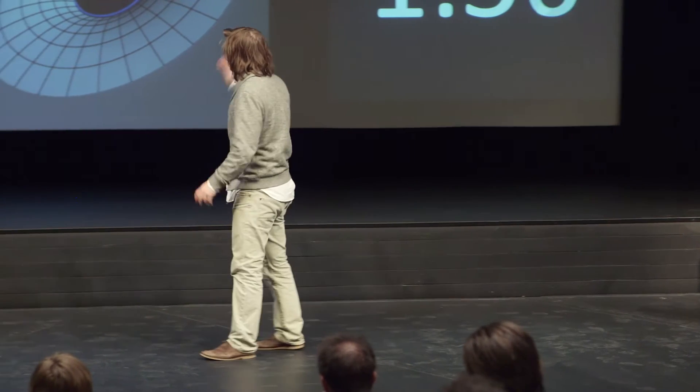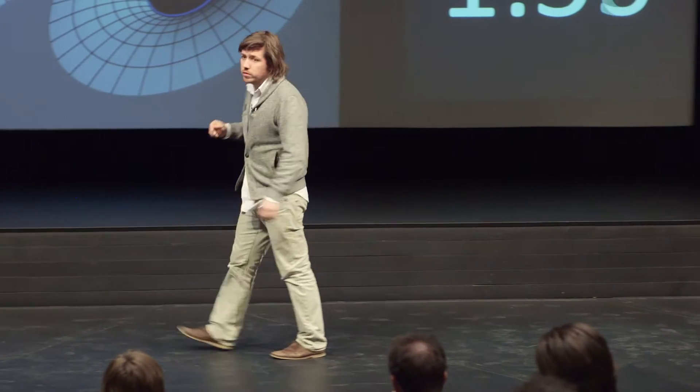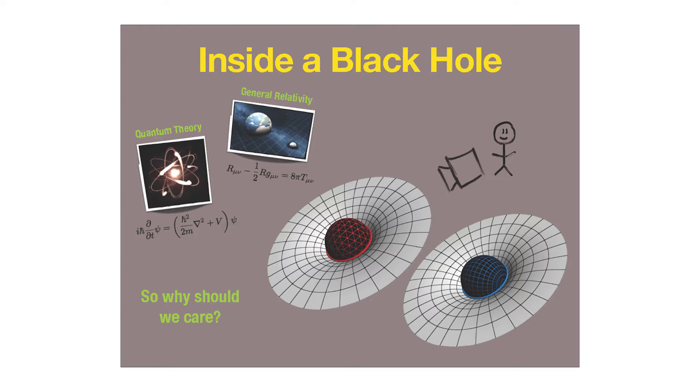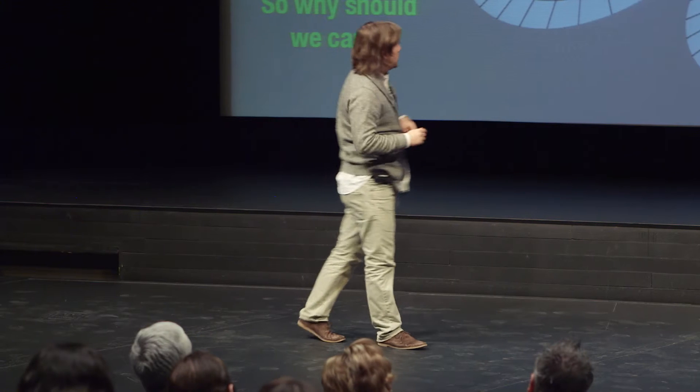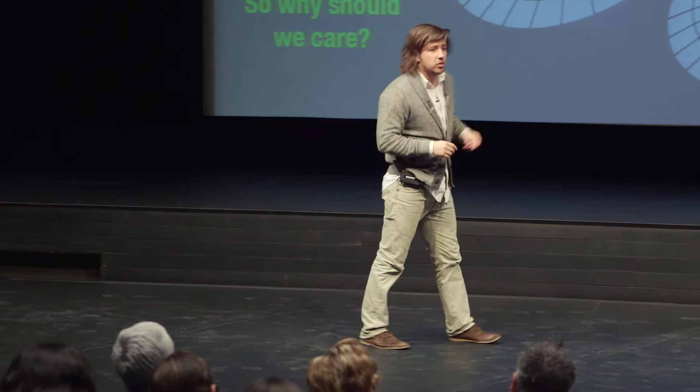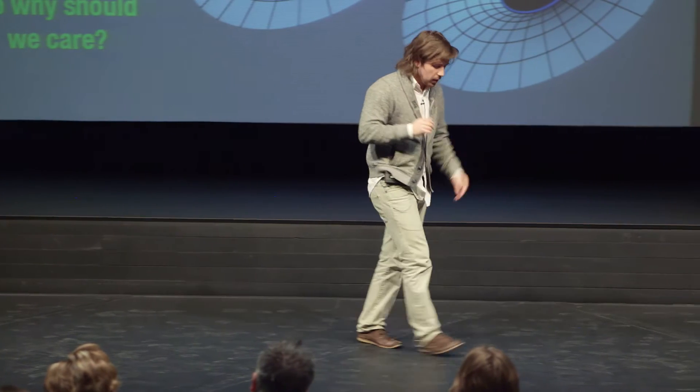The question I'm specifically interested in is: suppose we have two black holes that on the outside look identical — nothing different about them — but inside, inside the event horizon, their structure is different. Is there any experiment an observer standing outside the black hole can do to distinguish between them? You'd answer no, because there's no way any information from inside the black hole can leak out.